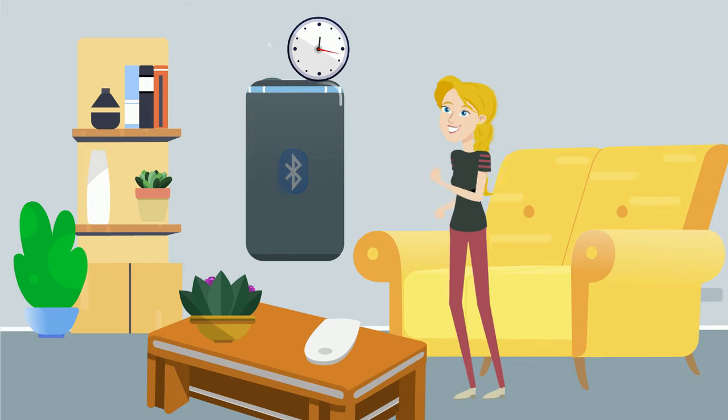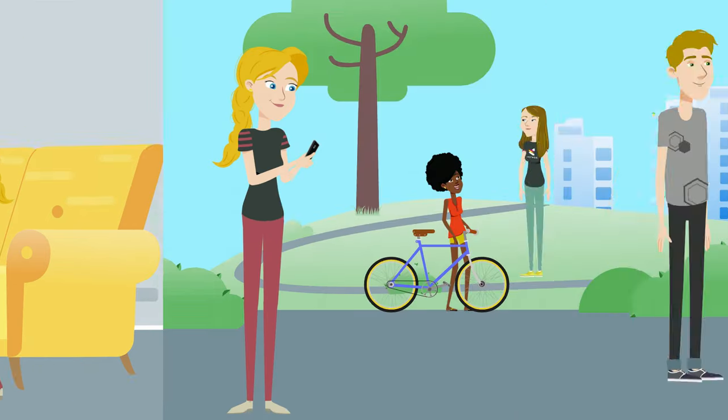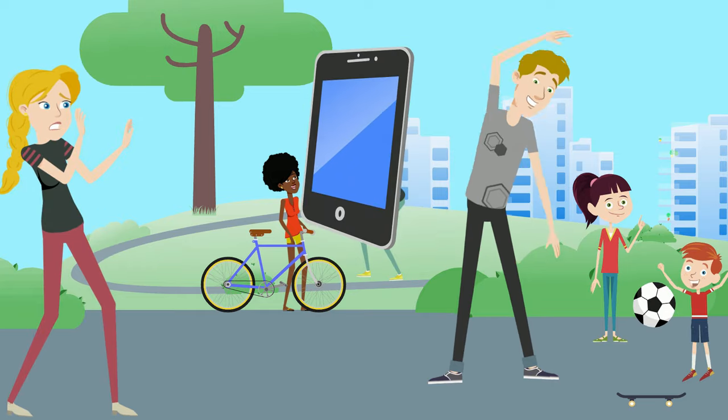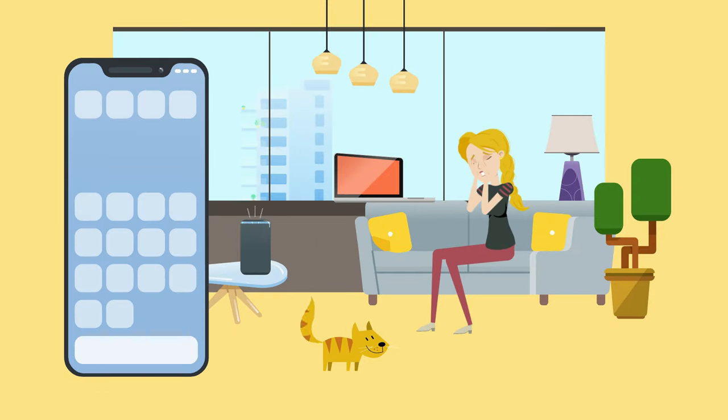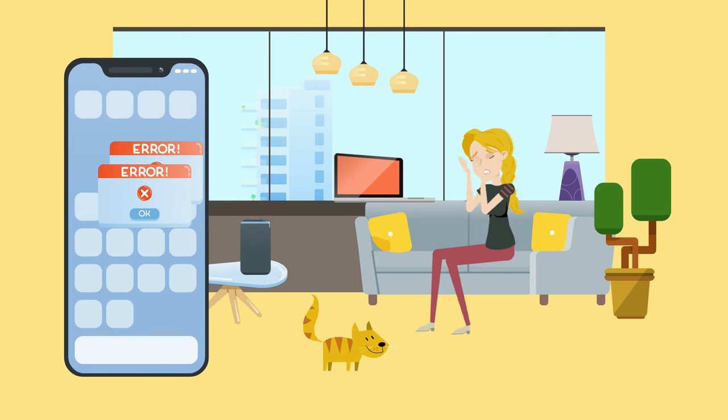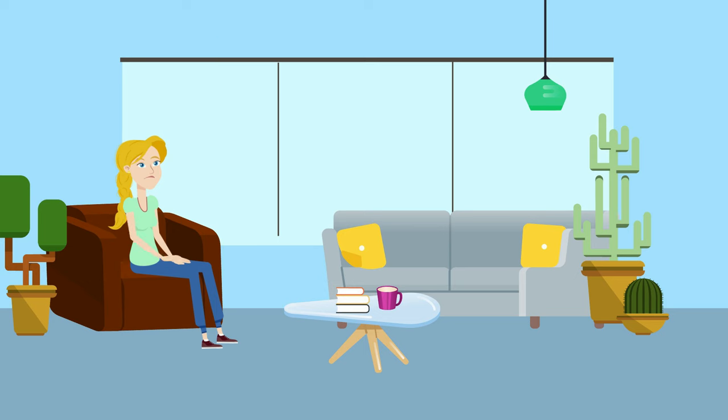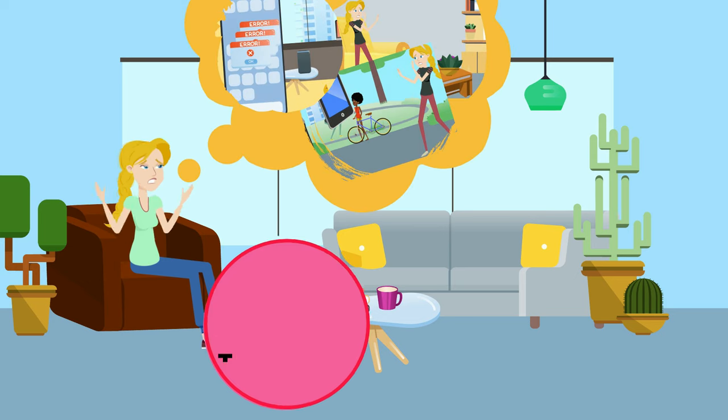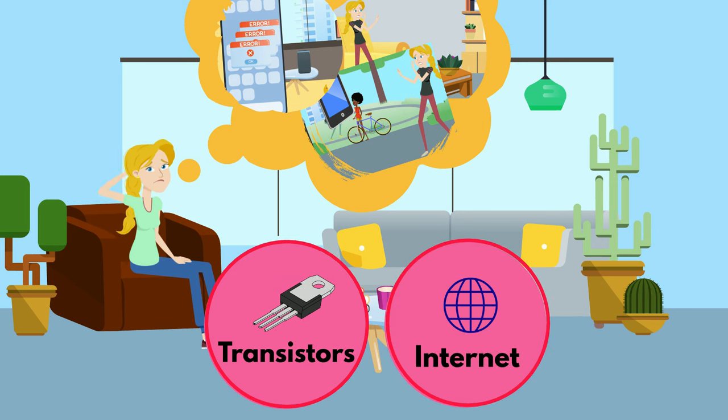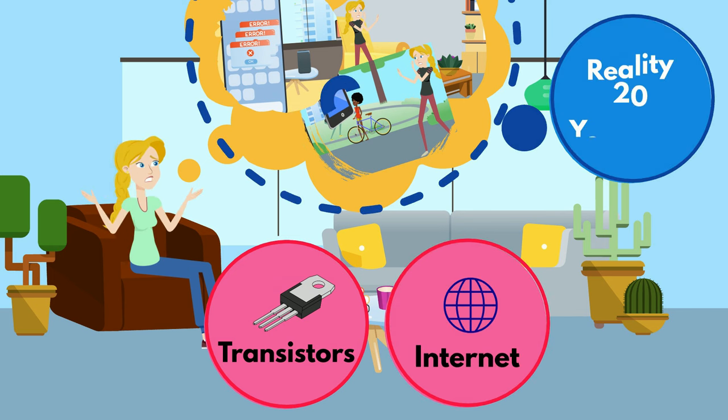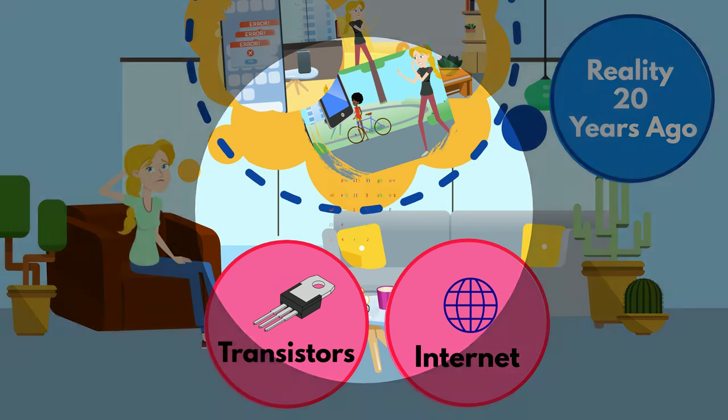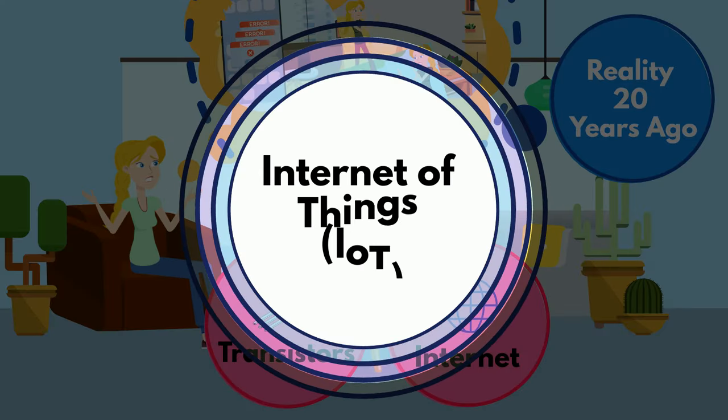Picture a world where your Bluetooth speakers vanish, where fitness trackers and smart cameras all fail. Picture a world where your phone can't do half the things you've come to rely on daily. Now this faraway land you're picturing isn't a world without transistors or the internet. This was reality about 20 years ago without the magical efficiency and convenience of the internet of things.